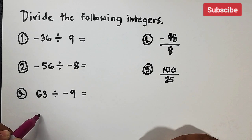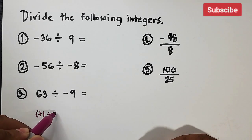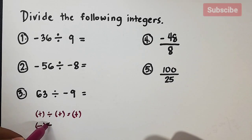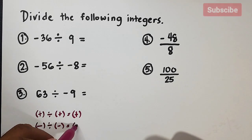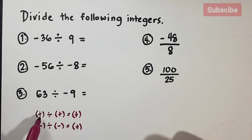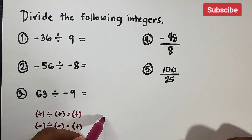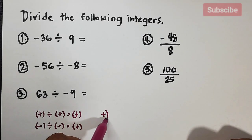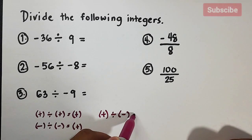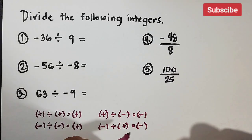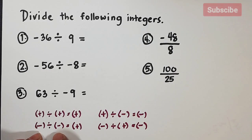The rule is: same signs give a positive result, different signs give a negative result. For example: positive divided by positive equals positive — that's same signs. Negative divided by negative also equals positive — same signs again. Two negative integers divided by each other are always positive. For unlike signs: positive divided by negative is always negative, and negative divided by positive is also always negative.